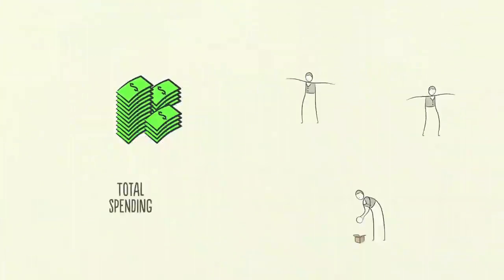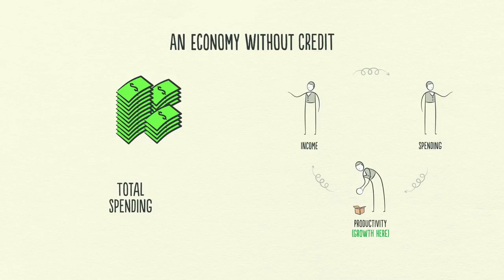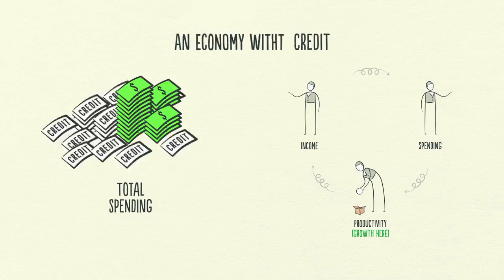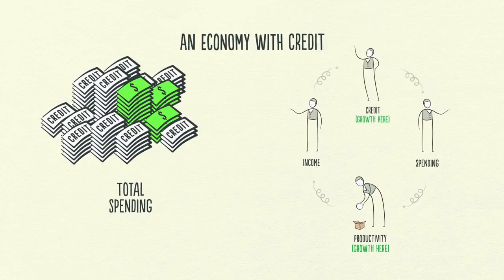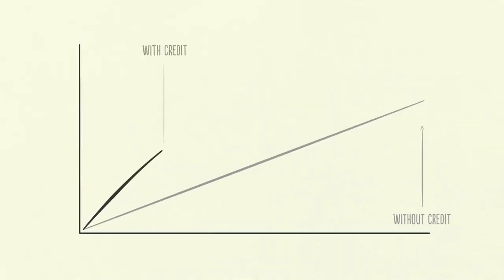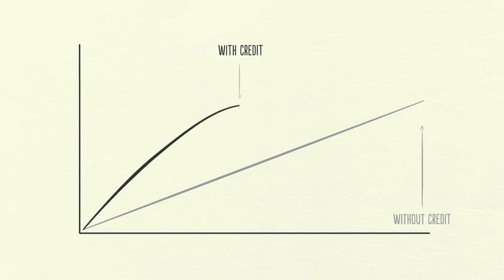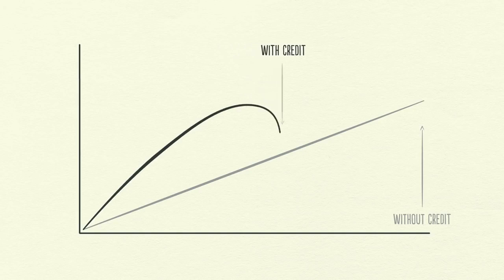Remember, in an economy without credit, the only way to increase your spending is to produce more. But in an economy with credit, you can also increase your spending by borrowing. As a result, an economy with credit has more spending and allows incomes to rise faster than productivity over the short run, but not over the long run.